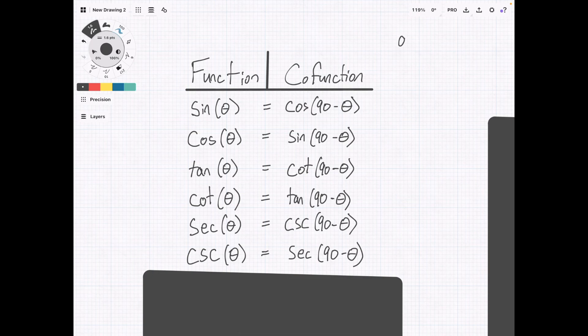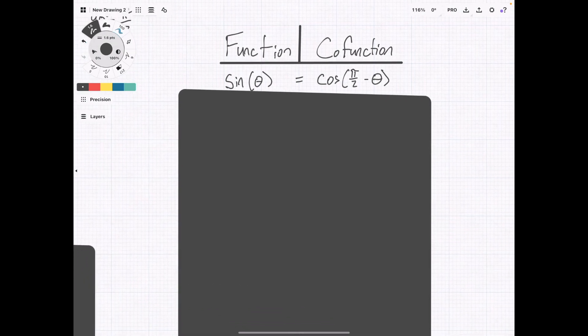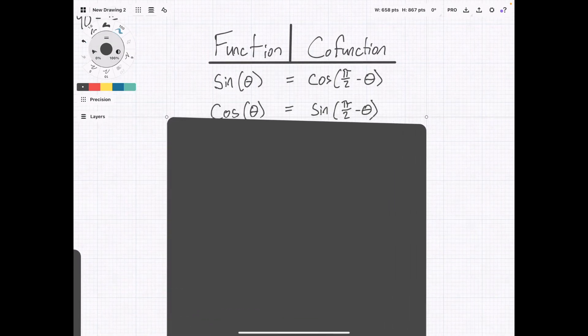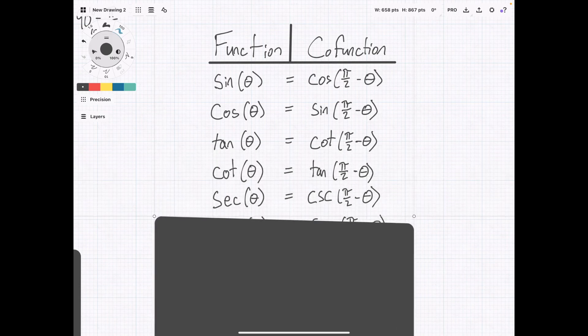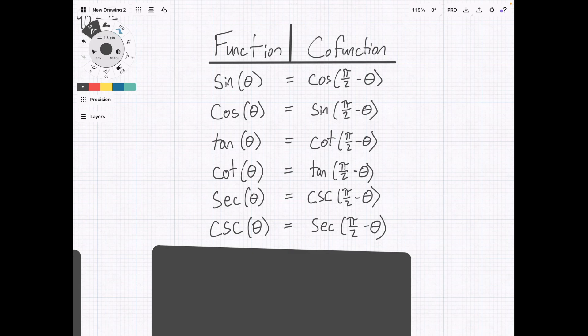90 degrees is also equal to pi over 2 radians. So I've also created this chart here to show you the same co-functions just with pi over 2 replacing the 90. So you might also see this form of the co-functions.